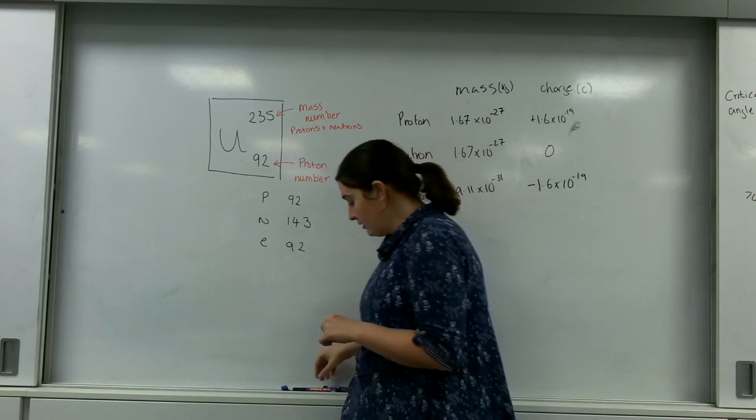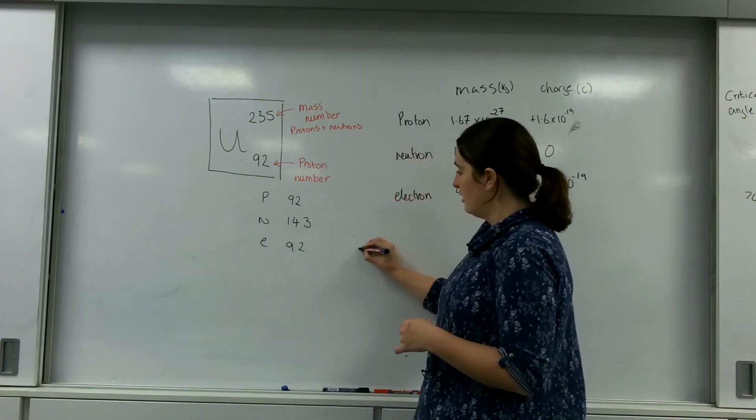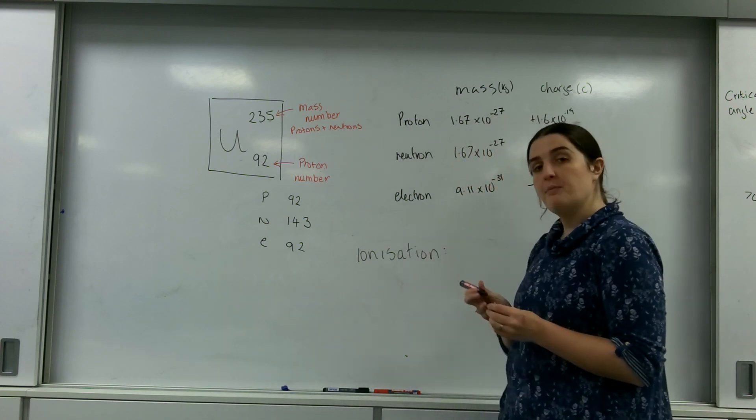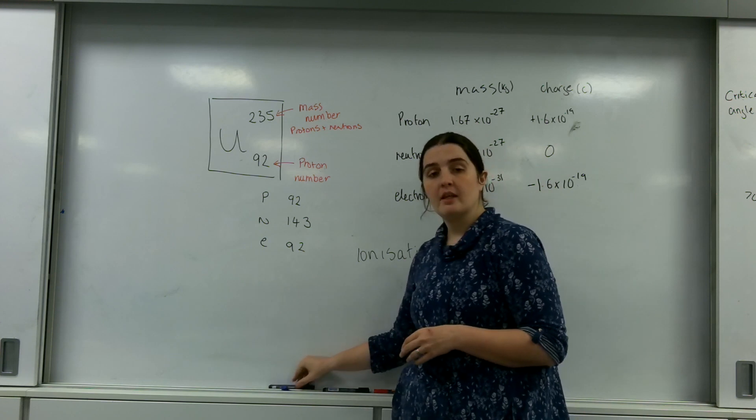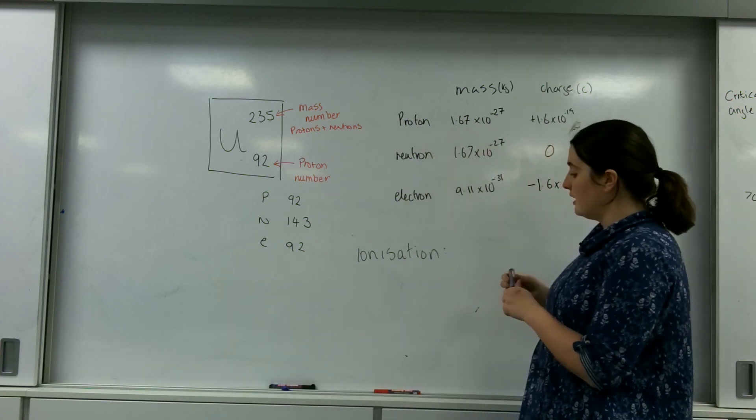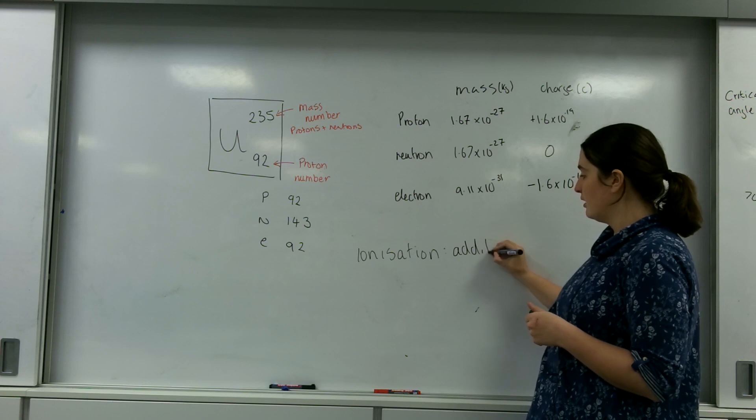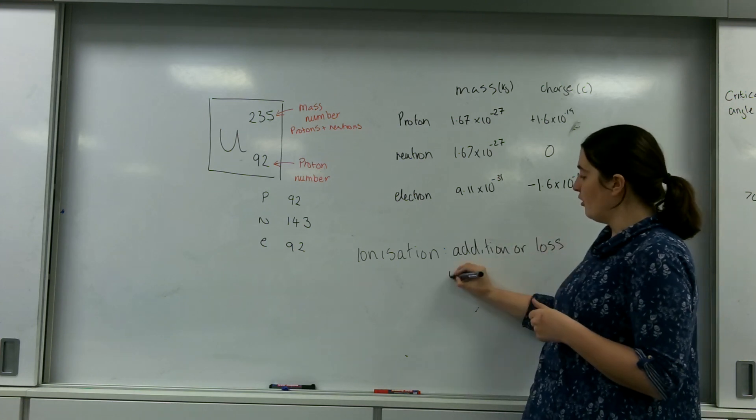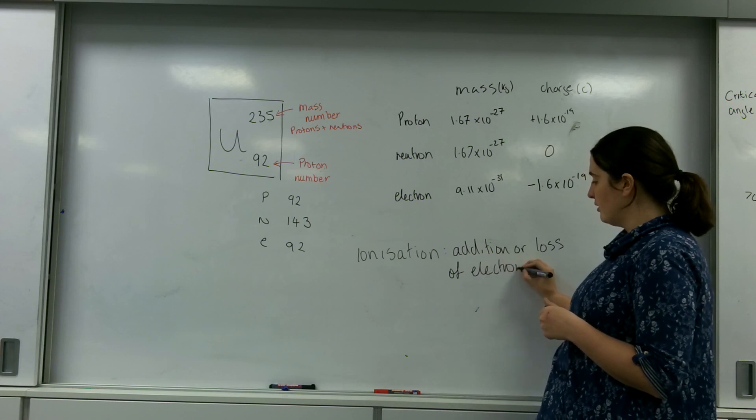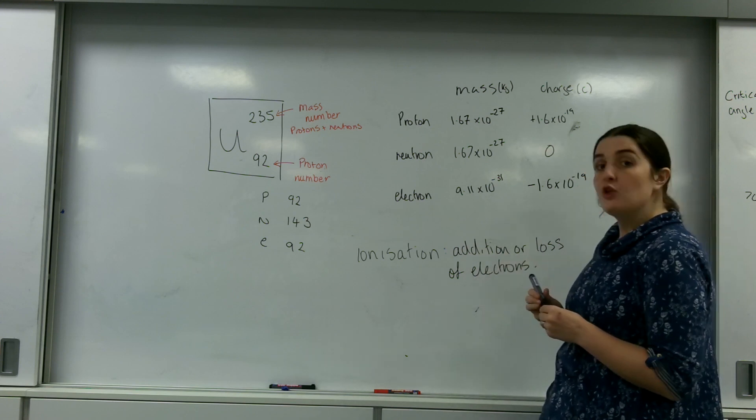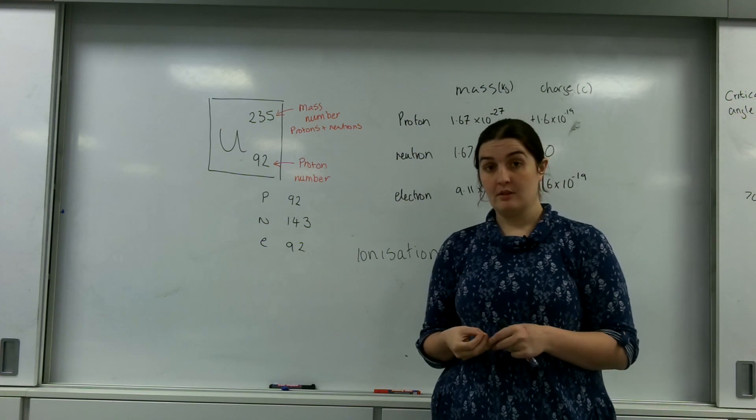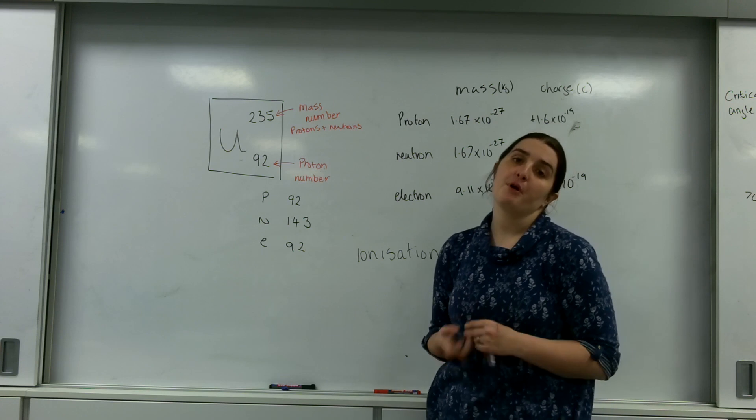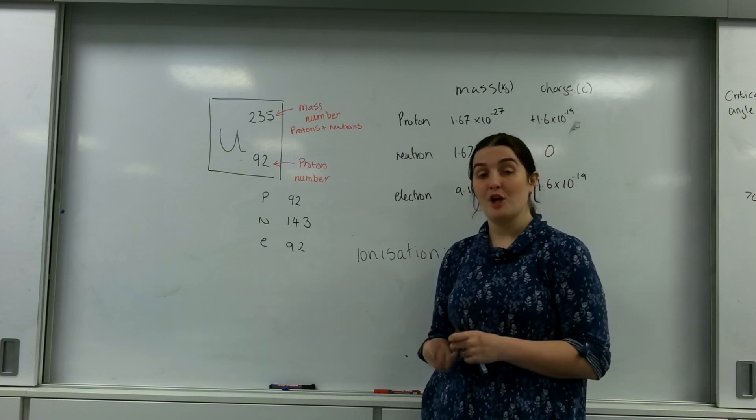Now ionization is something very important. It is the addition or loss of electrons. You can ionize an element by changing the number of electrons it has. You cannot change the number of protons it has because it would just become a new element.